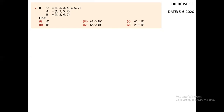First we are going to find out A complement. As I explained earlier, complement means we are going to find the difference between U and the given set. If we are finding A complement, it means we are finding the difference between U and A. Similarly, B complement means U minus B, and C complement means U minus C. Now let's solve this question.